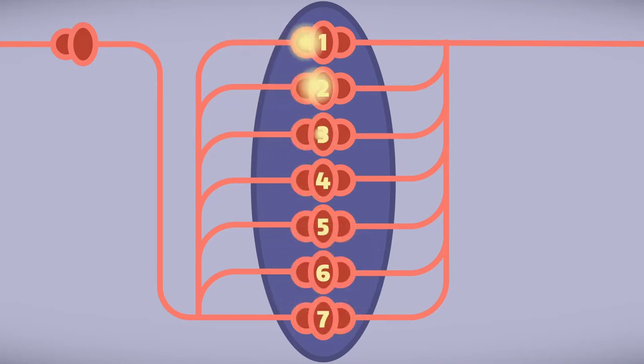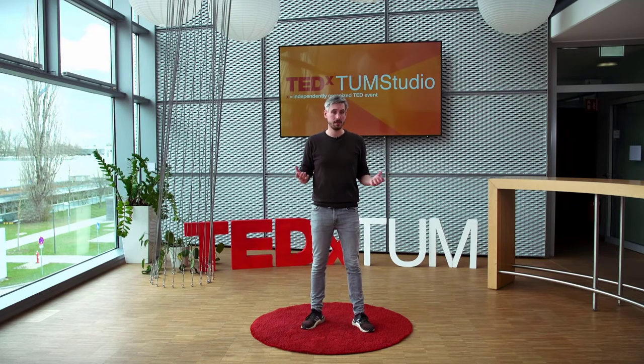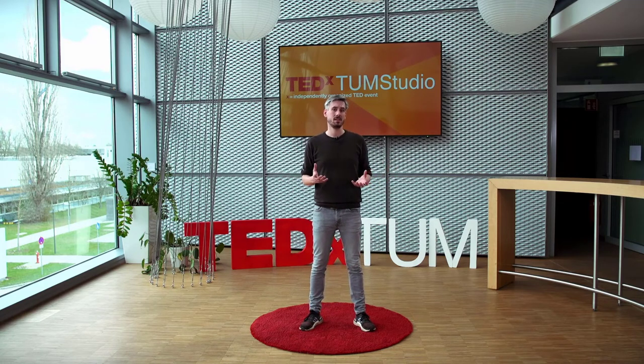And a certain ITD is then encoded by the place of that neuron that receives exactly input from the delay line that compensates for the external ITD. And we call this a map because the spatial distribution of excitation within the network reflects the direction of sound.